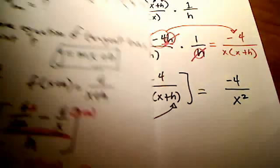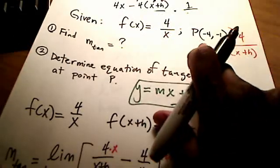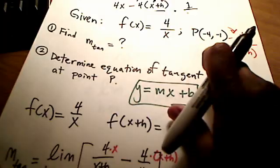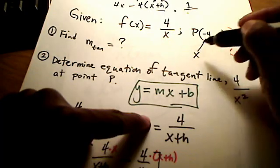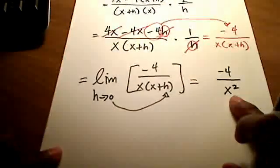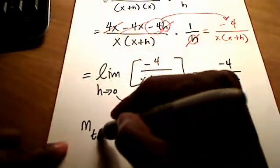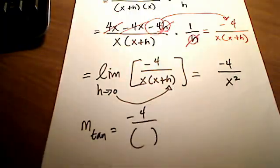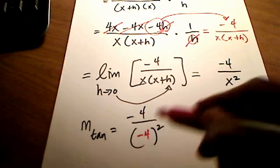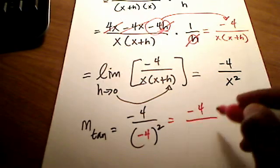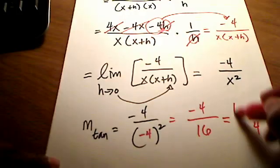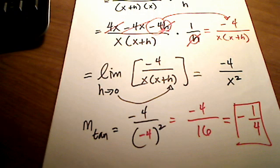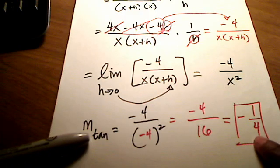Now remember, what we were given at the very beginning of the problem was to plug in this point of negative 4, negative 1, right? P at negative 4, negative 1, which means my x value is a negative 4. So in place of x squared, I'm going to stick in negative 4. I'm actually going to evaluate this out. So the slope of the tangent line is equal to negative 4 over x squared. But instead of x, I'm popping in a negative 4, which is just negative 4 over 16, or simplified is negative 1 fourth. So there's the answer to part A. The slope of the tangent line is negative 1 fourth.